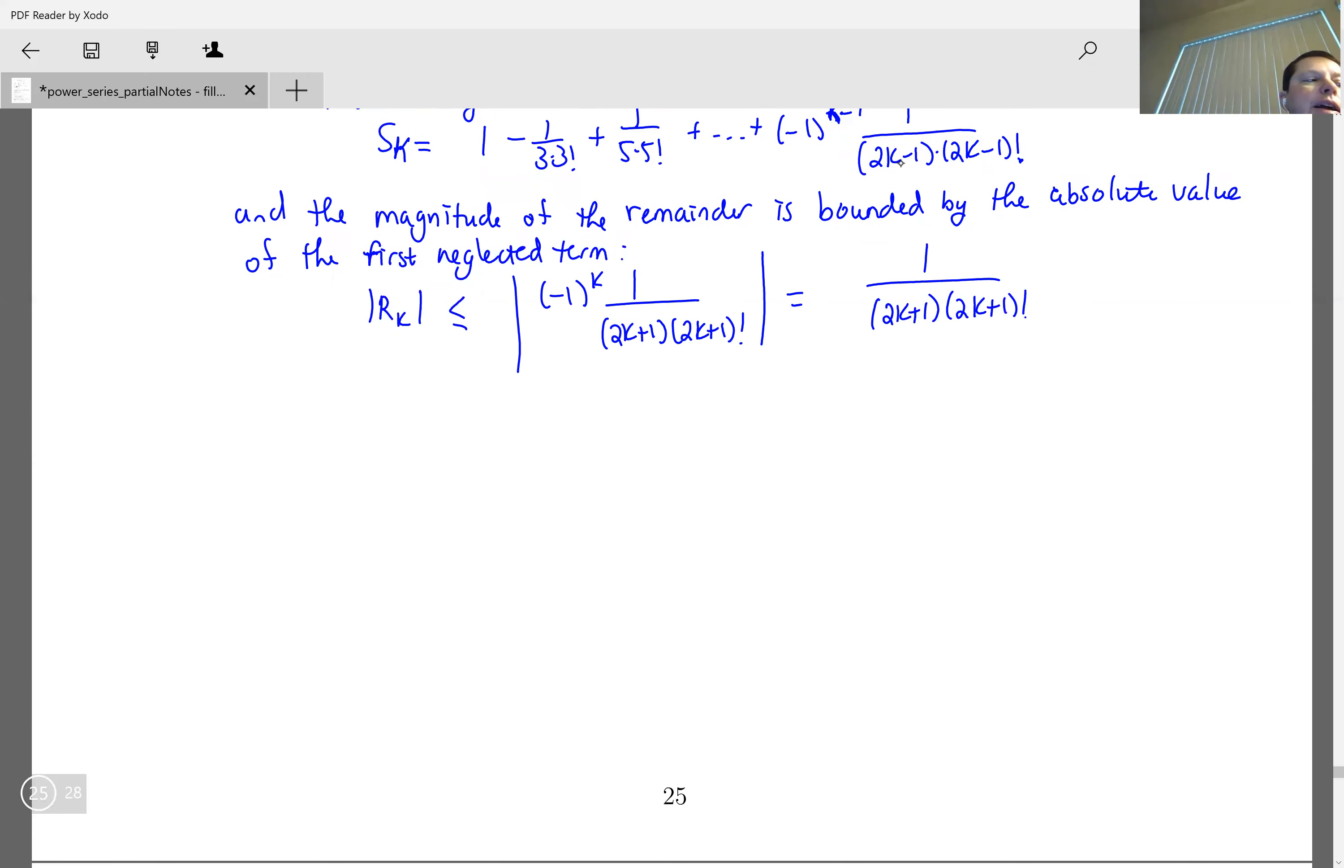Now, I'd like to estimate my integral with an error no greater than 10 to the minus fifth. So what we need is we need that remainder to be less than or equal to 10 to the fifth. So that means that we're going to need this 1 over 2k plus 1 times 2k plus 1 factorial to be less than or equal to 10 to the negative fifth.